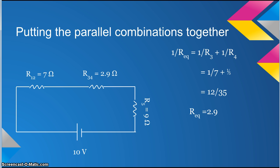We are now left with three resistors in series: R1,2, R3,4, and R5. We need to combine them so that we have one circuit with one resistor to find the total resistance.